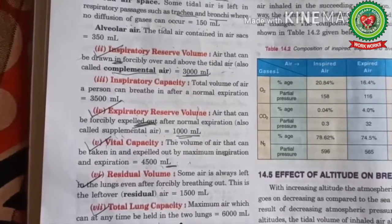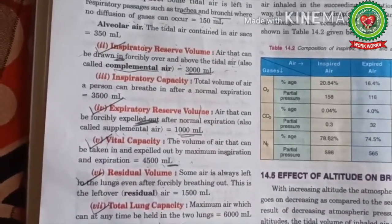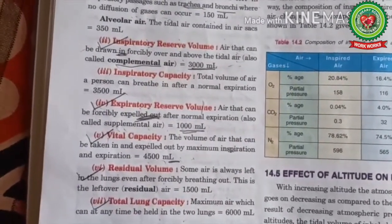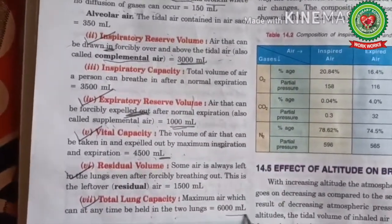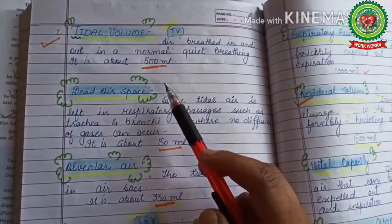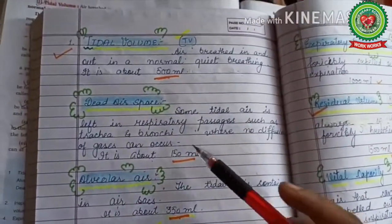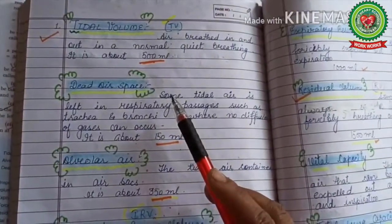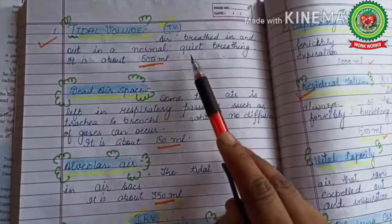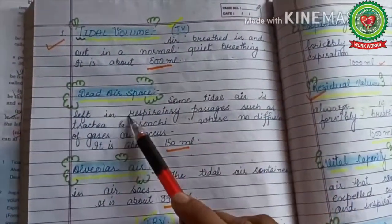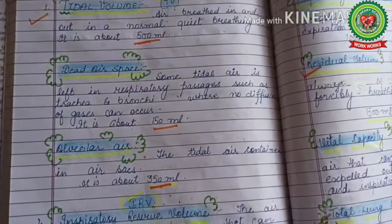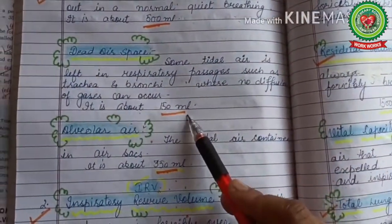These terms you have to learn and note down in your copies. Tidal volume can be represented as TV. Dead air space is the tidal air left in the respiratory passage — like the trachea and bronchi — where no diffusion can occur; its value is about 150 ml. Alveolar air is the tidal air contained in the air sacs, and its value is about 350 ml. Inspiratory reserve volume can be written as IRV. Inspiratory capacity is the total volume of air a person can breathe in after normal expiration. Expiratory reserve volume can be written as ERV.